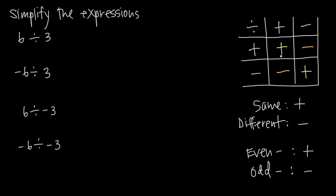What this tells us is that if we divide a positive number by a positive number, we're going to get a positive answer. If we divide a negative number by a negative number, we're going to get a positive answer. If, on the other hand, we divide a negative number by a positive number, or a positive number by a negative number, we're going to get a negative answer.